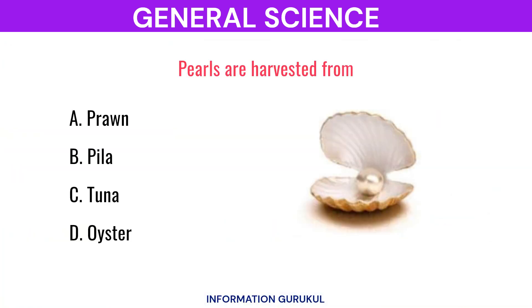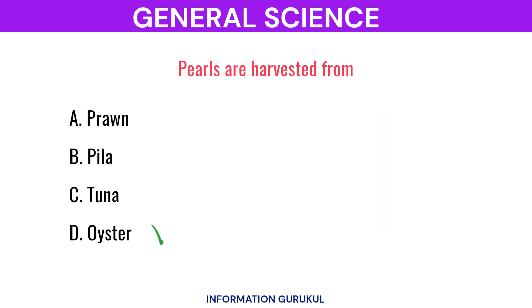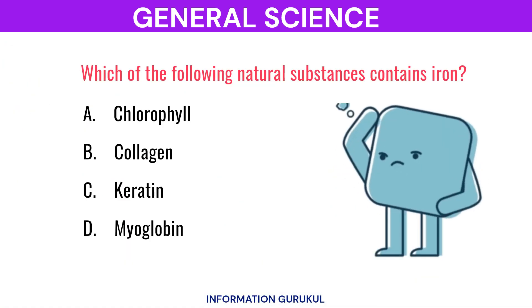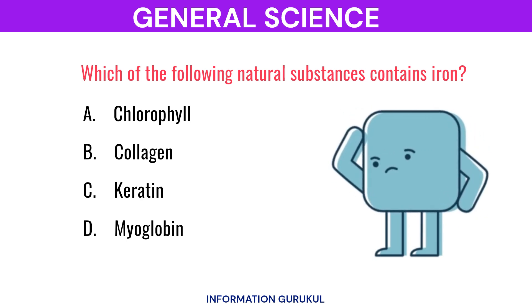Pearls are harvested from oysters. Which of the following natural substances contains iron?